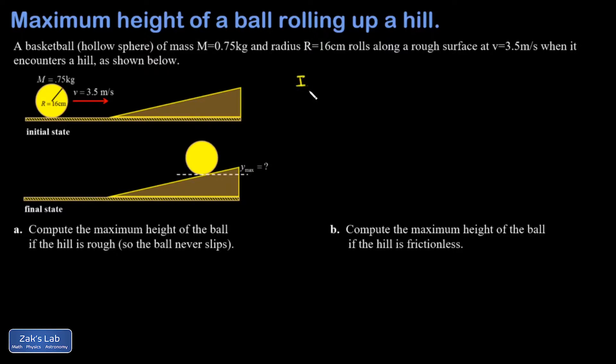The moment of inertia of a hollow sphere turns out to be two-thirds mr squared. I also want to write down the expression for total kinetic energy of an object that is both translating and rotating. That's one half times the mass times the center of mass speed squared plus one half times its moment of inertia with respect to the center of mass times the rotation rate squared.